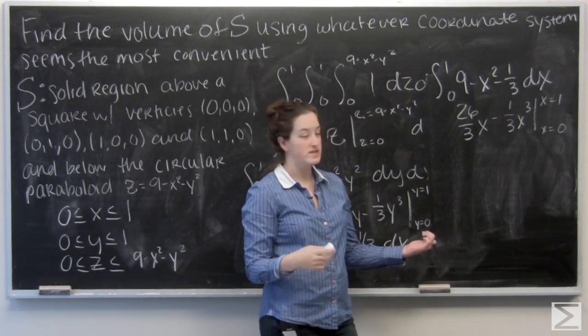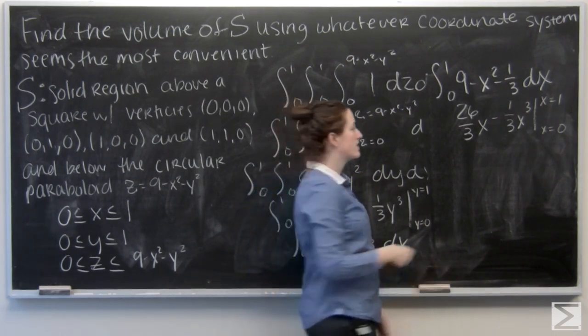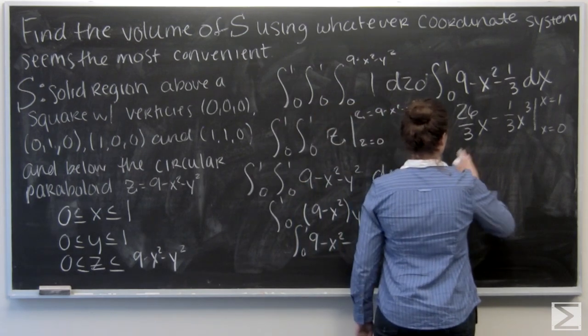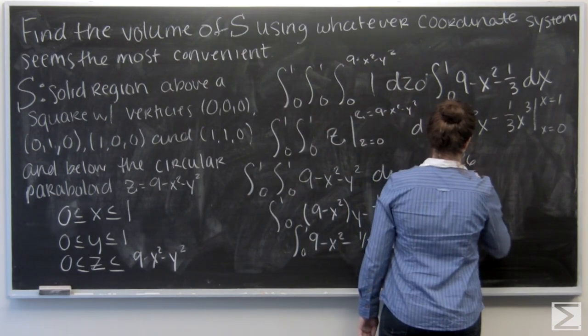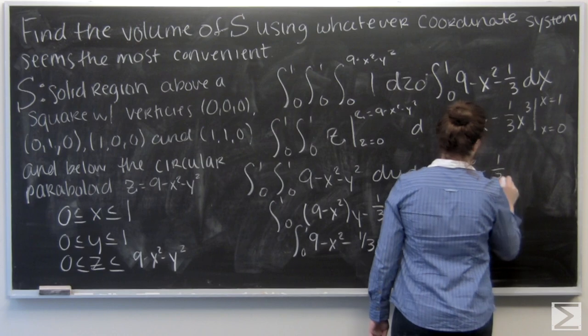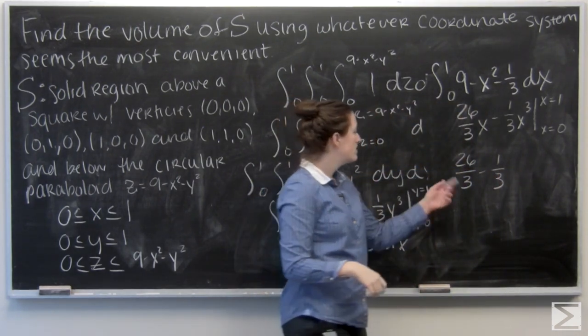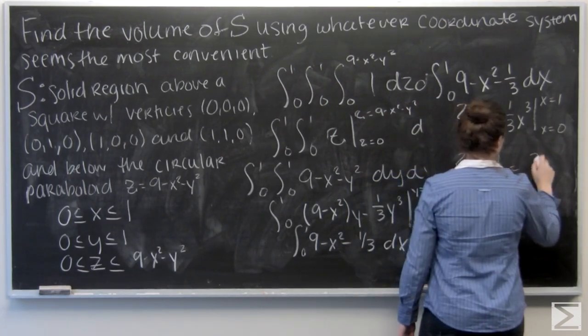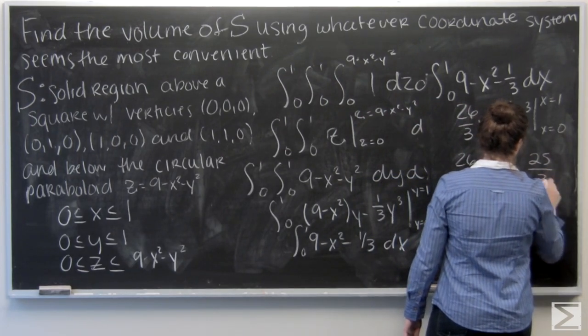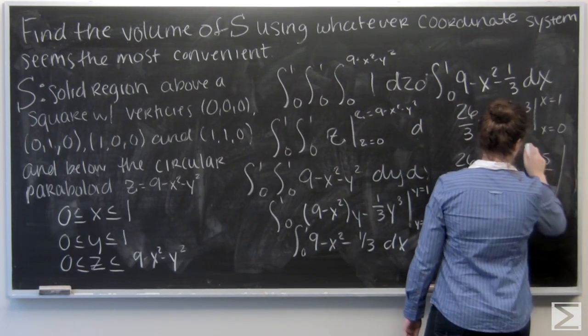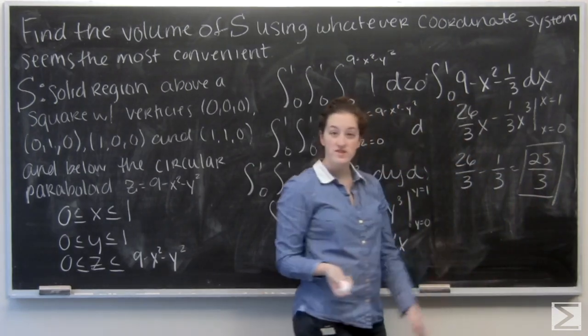For x = 1, I get 26/3 - 1/3. For x = 0, both terms are 0. Subtracting these, 25/3 is my answer.